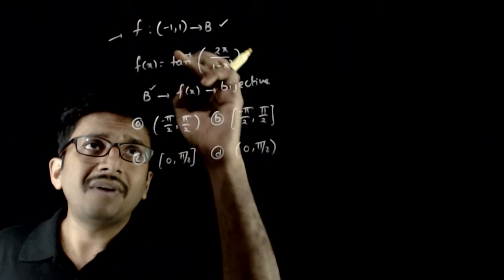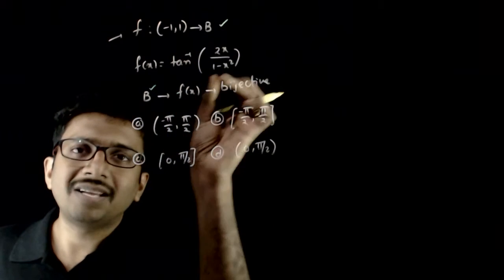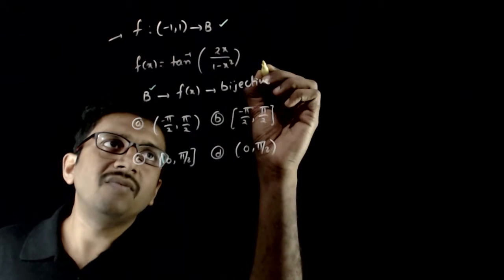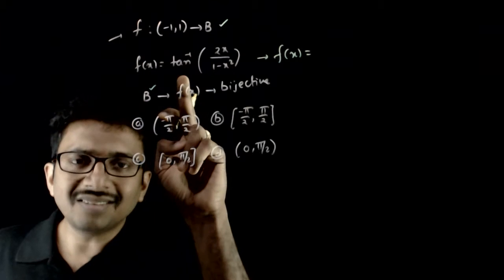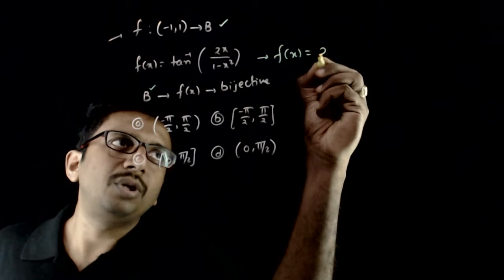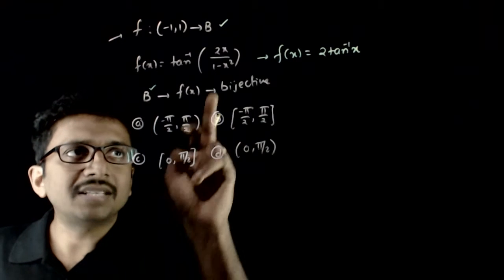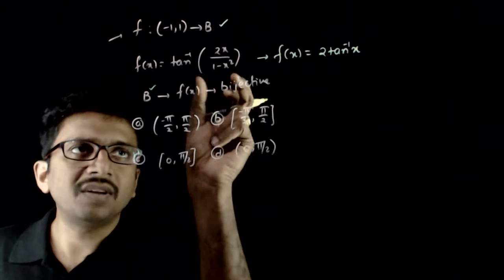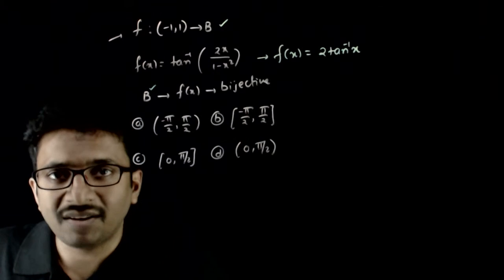First, if you analyze the domain of this function, if x is in between minus 1 and plus 1, from inverse trigonometric concepts you can see that f of x is equal to - this is a formula for 2 tan inverse x. So 2 tan inverse x. As long as x is in between minus 1 and plus 1, tan inverse of 2x by 1 minus x square will be equal to 2 tan inverse x.